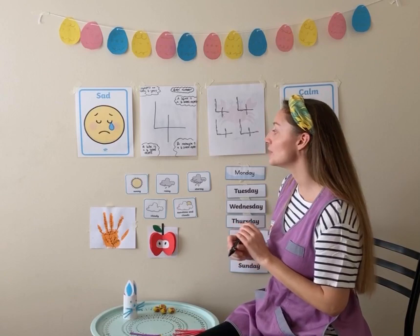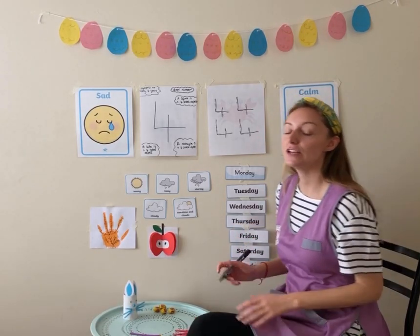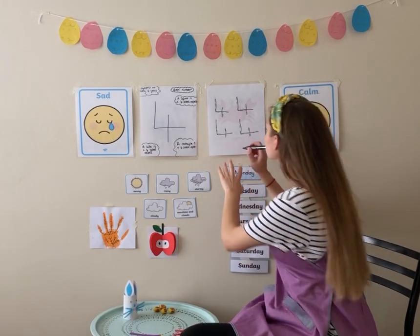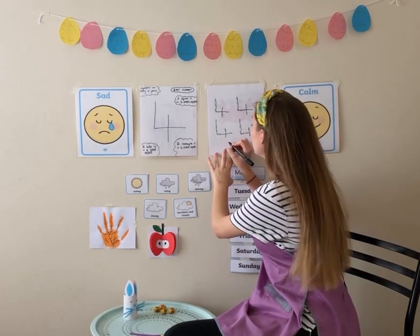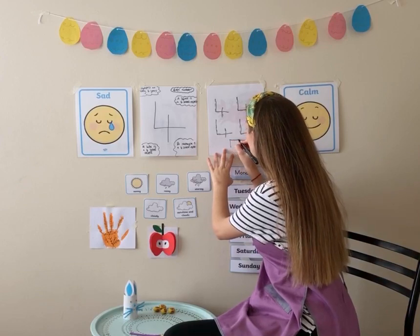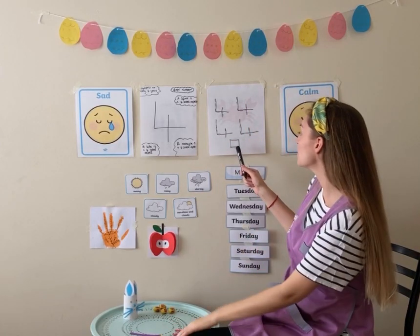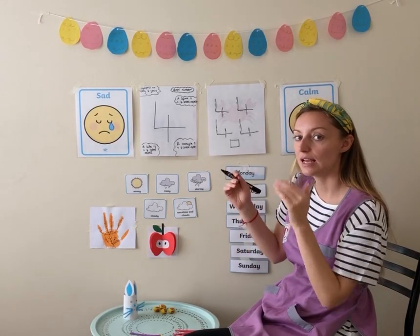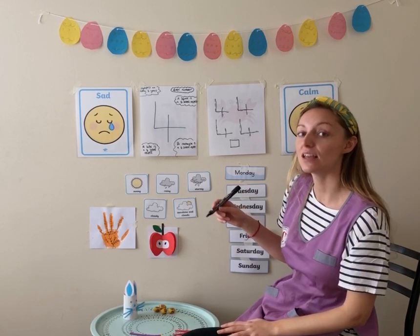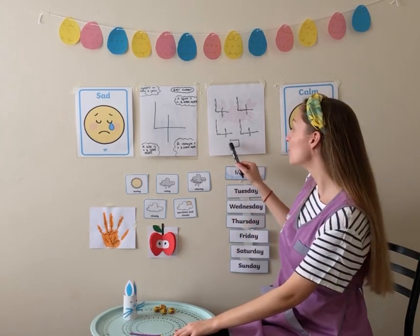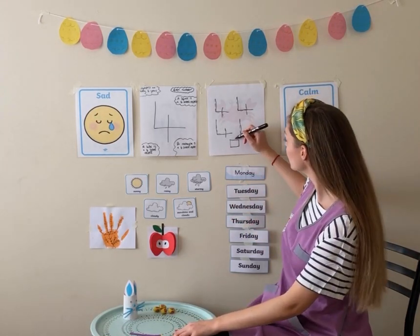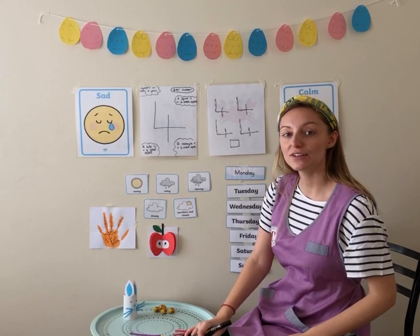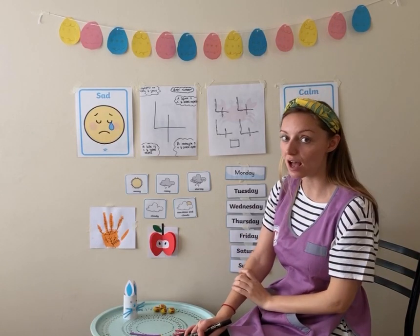Now, I wanted to also share some interesting facts about the number 4. So, I'm going to draw a square. Can you all see my square? A square has equal sides. Let's count how many sides the square has: 1, 2, 3, 4. Very good everybody. A square has 4 sides.